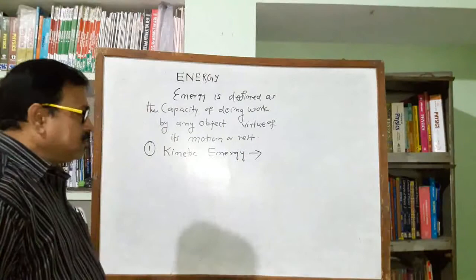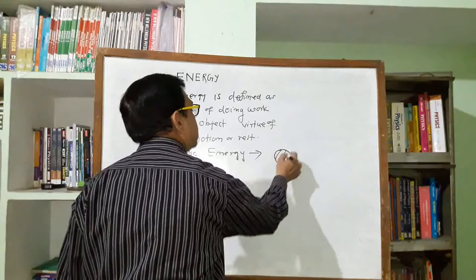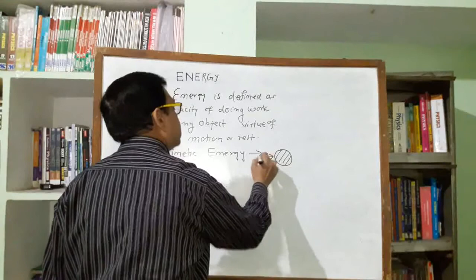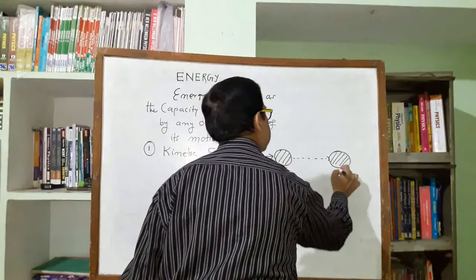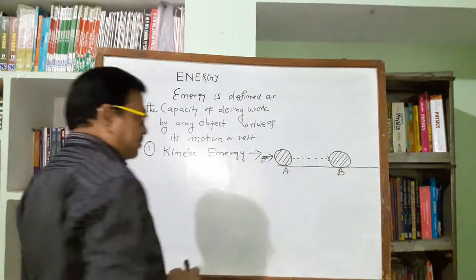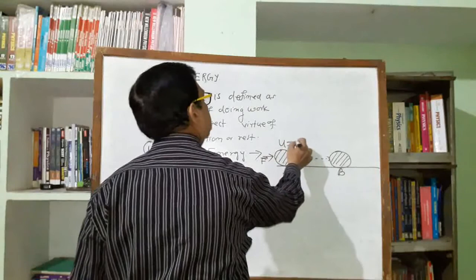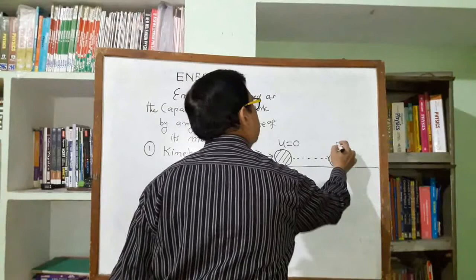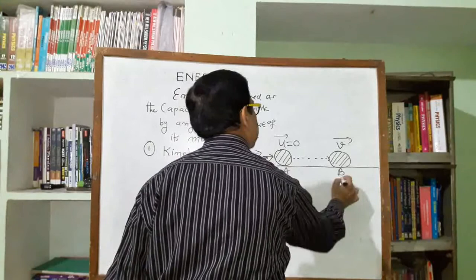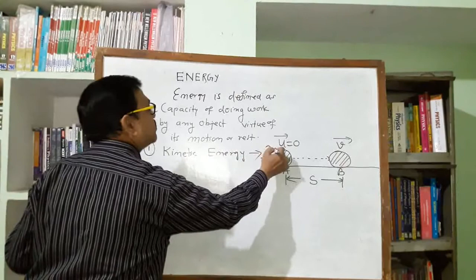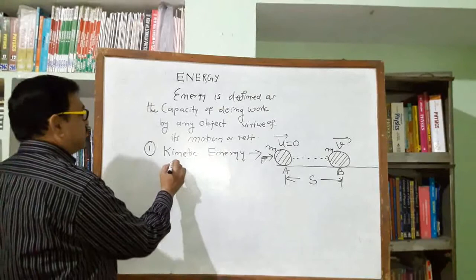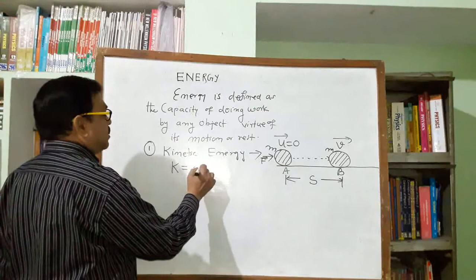Suppose an object is placed at position A and a force has been applied on it. It displaces in the direction of force and comes to a new position B, such that the displacement from A to B is S. Initially the object was at rest, so initial velocity u is equal to zero. When it comes to position B, it acquires final velocity v. If mass of the object is M, the formula for kinetic energy is half mv squared.